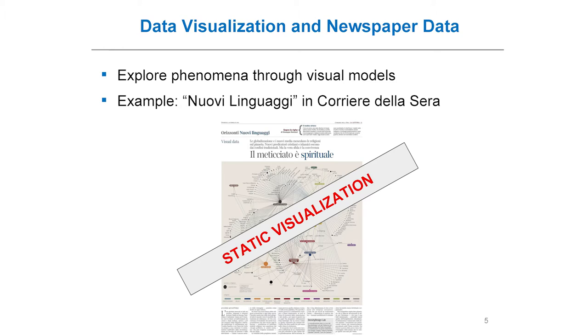As for the relationship between data visualization and newspaper data, visualizations are very common in newspapers. There are many visual approaches to data journalism. In Italy, for example, we have a wiki page by Corriere della Sera, one of the most important newspapers in Italy. It's a collaboration between the newspaper and a research group at Politecnico in Milan that works on design and visualizations, and every week there is a visualization that tries to explain important and complex social and political phenomena in a visual context. Of course, all these visualizations are static — they are on newspaper.